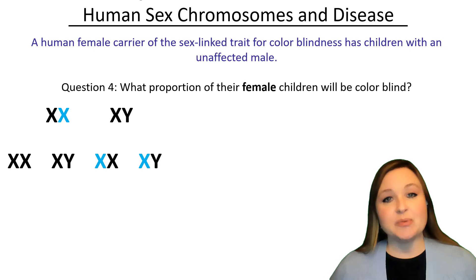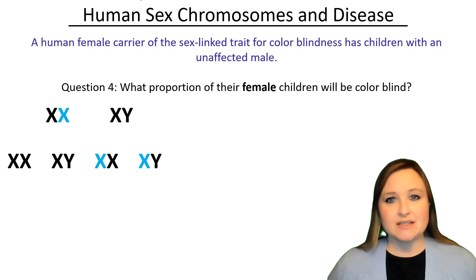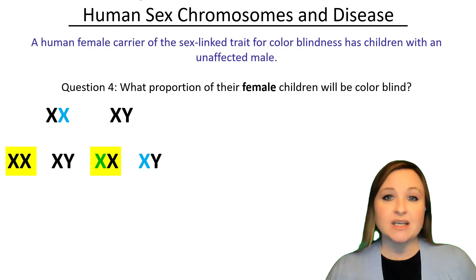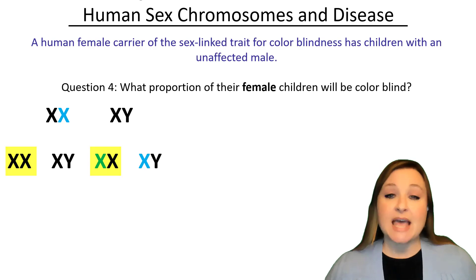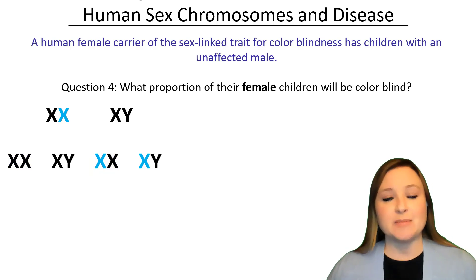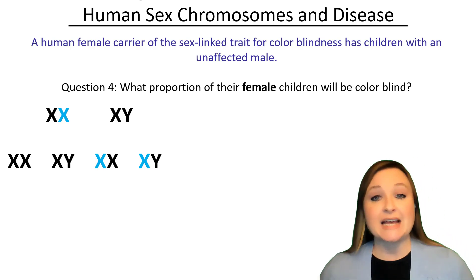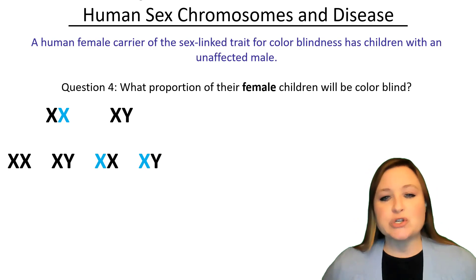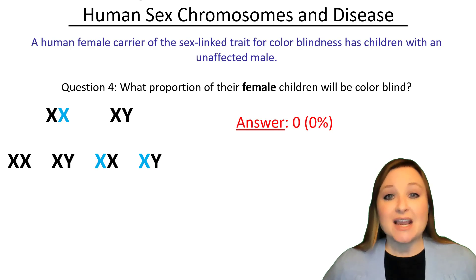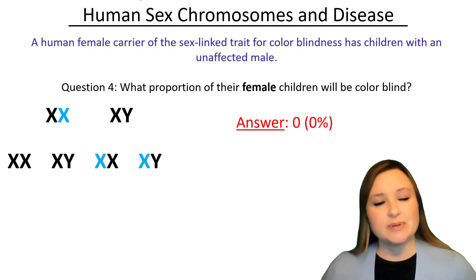Now let's break this down by sex. What proportion of their female children will be colorblind? Looking at the female offspring: they can be XX with both X's having the normal gene for vision, or XX as a carrier with one normal version and one with the colorblindness trait. So what proportion of their female children will be colorblind? Zero percent — because carriers do not have the disease, since they have the normal X to compensate.